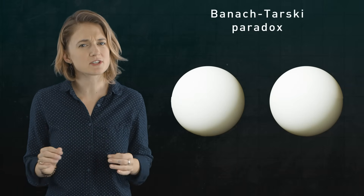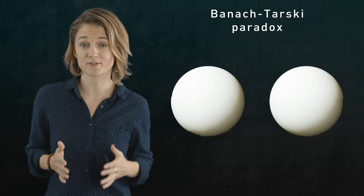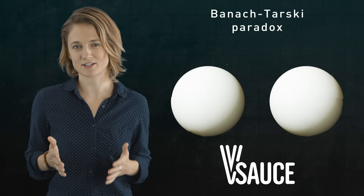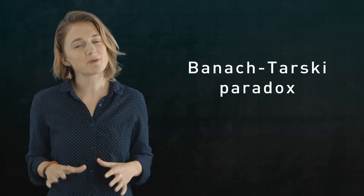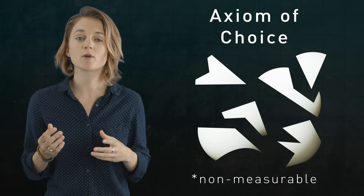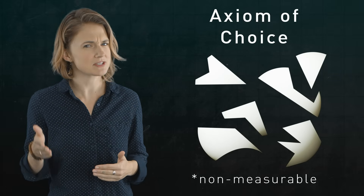You have doubled the sphere. It's okay if that feels confusing — it's called a paradox for a reason. If you want to see the detailed construction, check out the Vsauce video linked in the description. The magic behind the Banach-Tarski paradox is in the axiom of choice. The pieces you break the sphere into are non-measurable; they require the axiom of choice, or something similar, to construct.